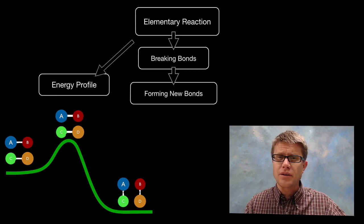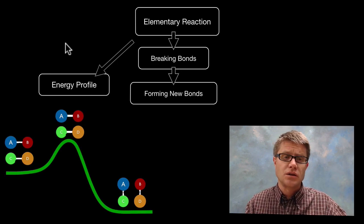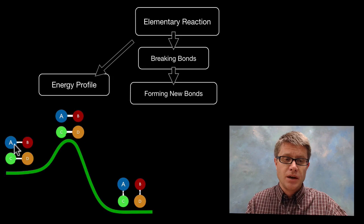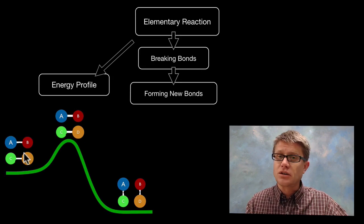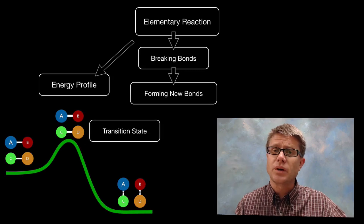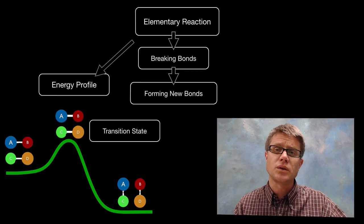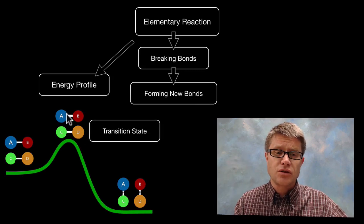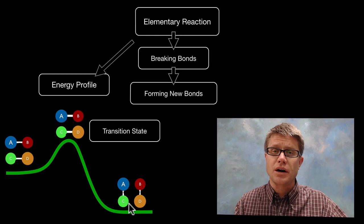A good way to look at how that works in terms of energy is to use what's called an energy profile. This shows the amount of potential energy those chemicals had before the reaction and after. The molecules in between are in what's called a transition state — they're transitioning from reactants to products.